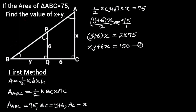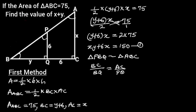Since triangle BPQ and triangle ABC are right triangles, it follows that triangle BPQ is similar to triangle ABC. The proportionality of their corresponding sides is: BC over BQ equals AC over PQ. BC is equal to Y plus 6, BQ is equal to Y, AC is equal to X, and PQ is equal to 6.